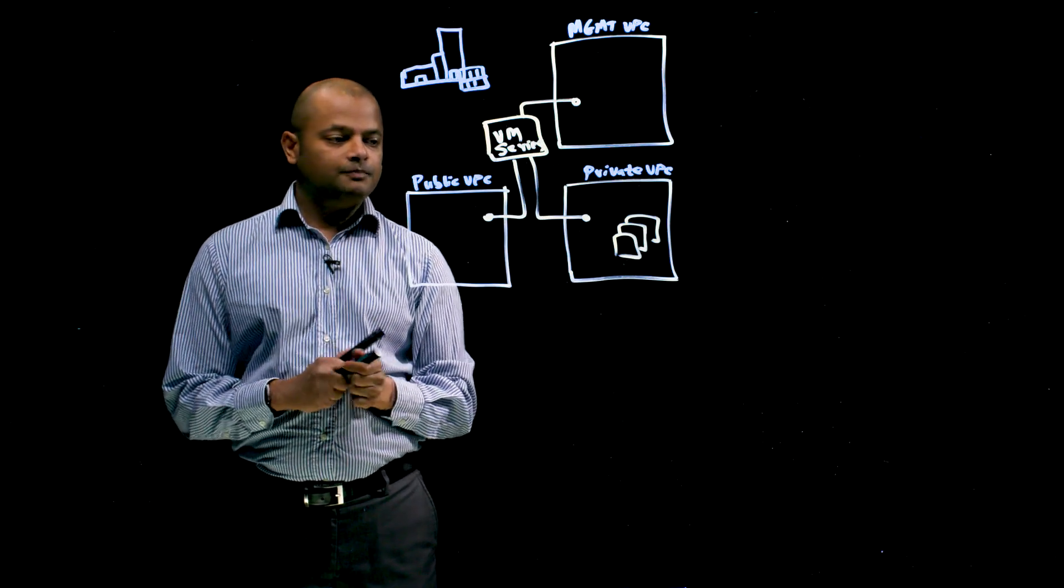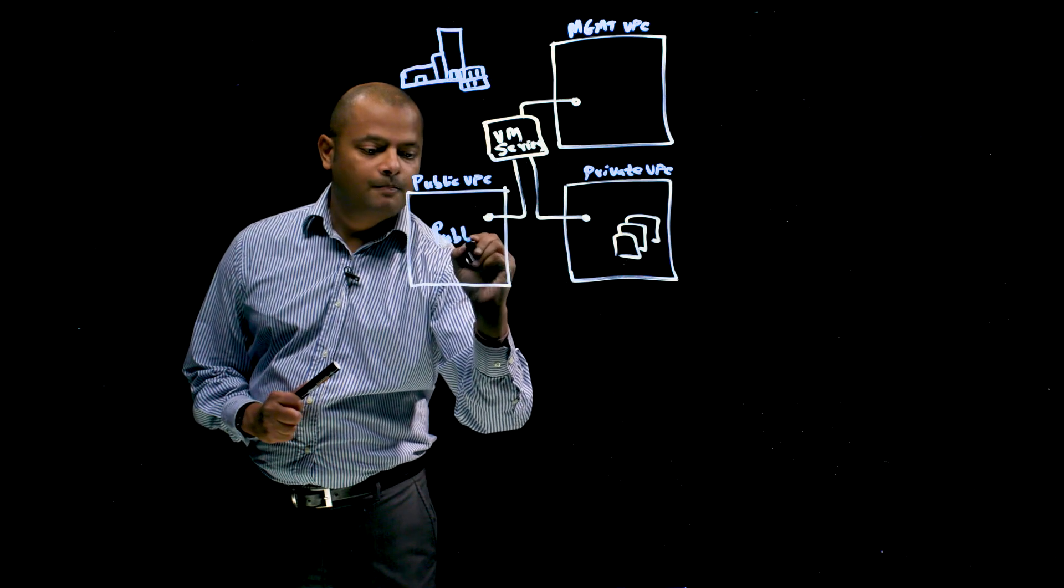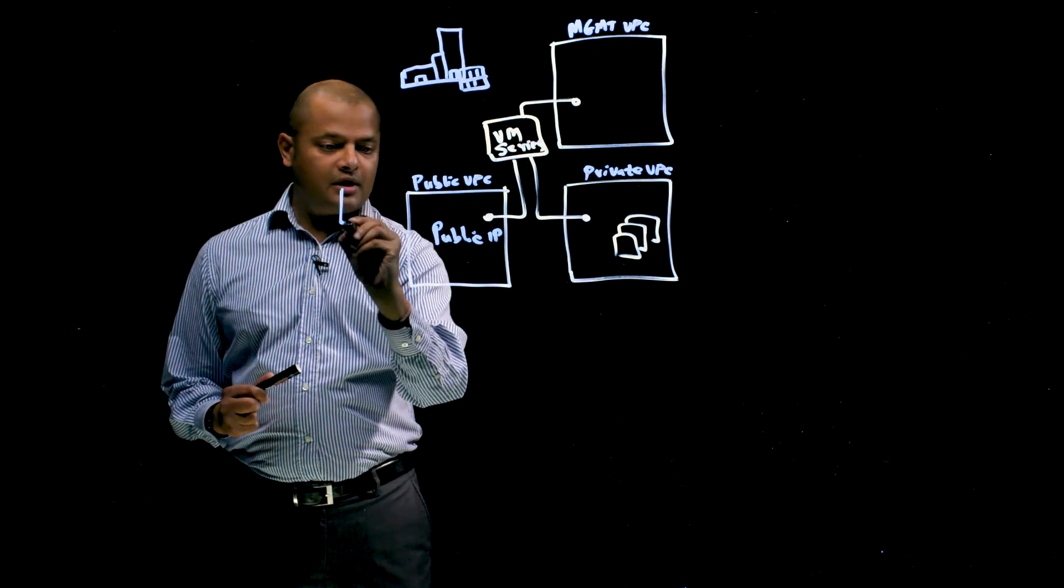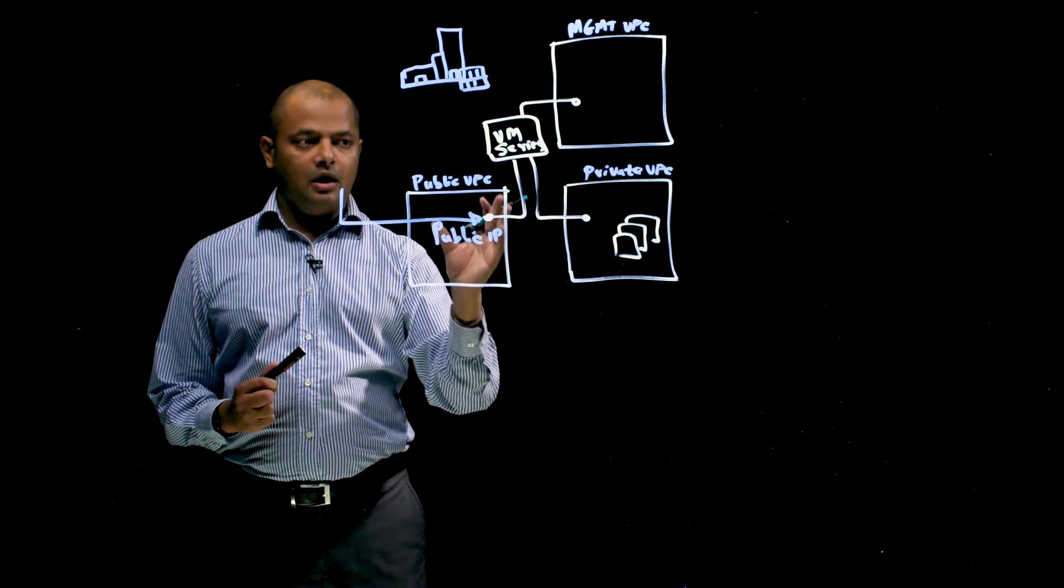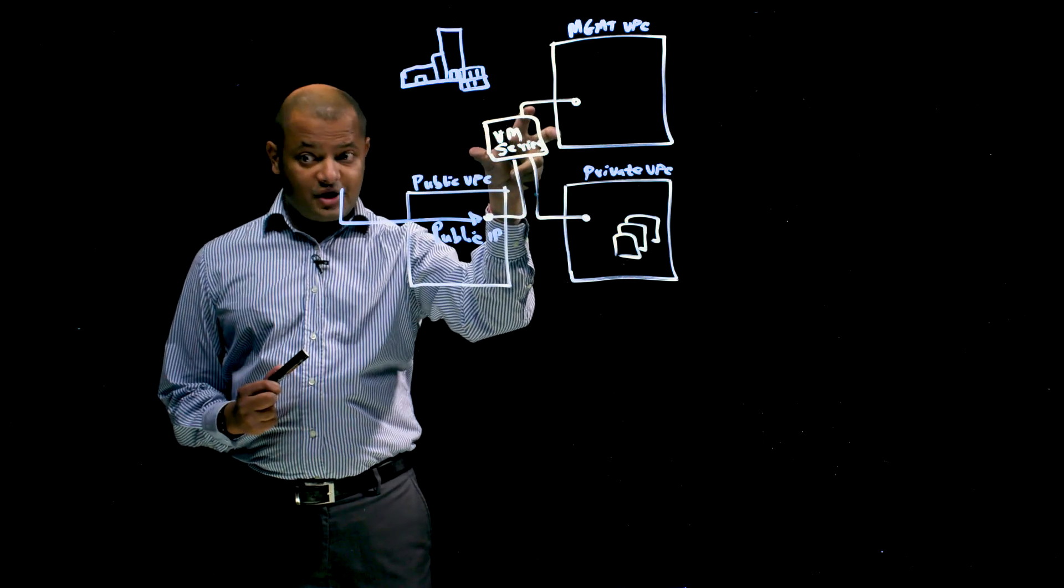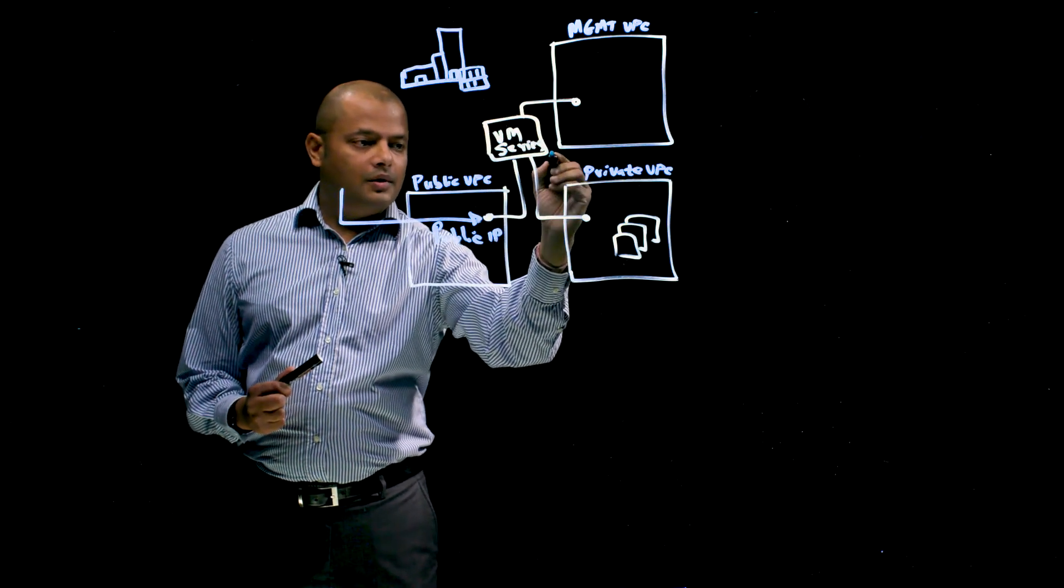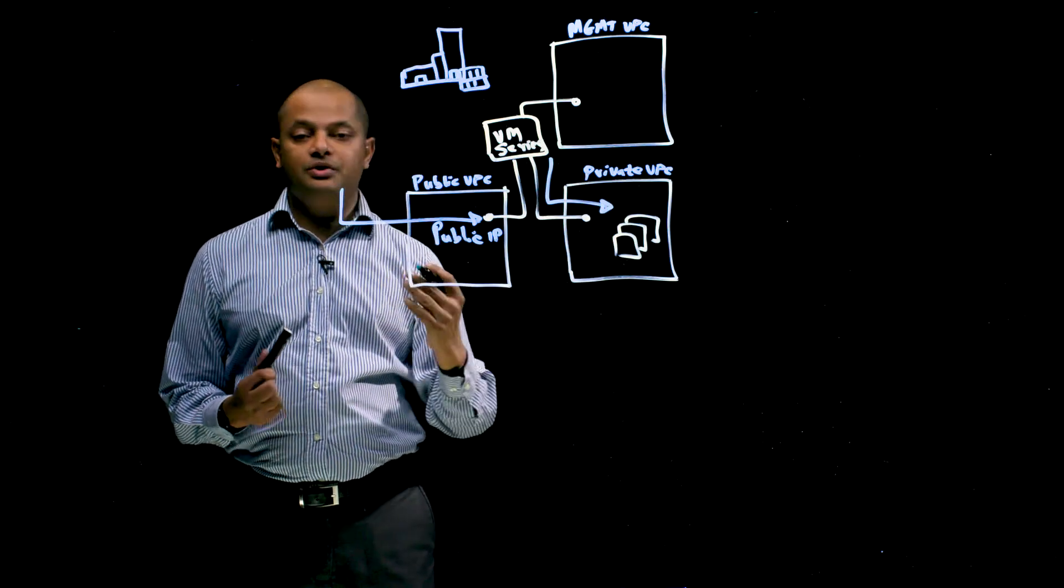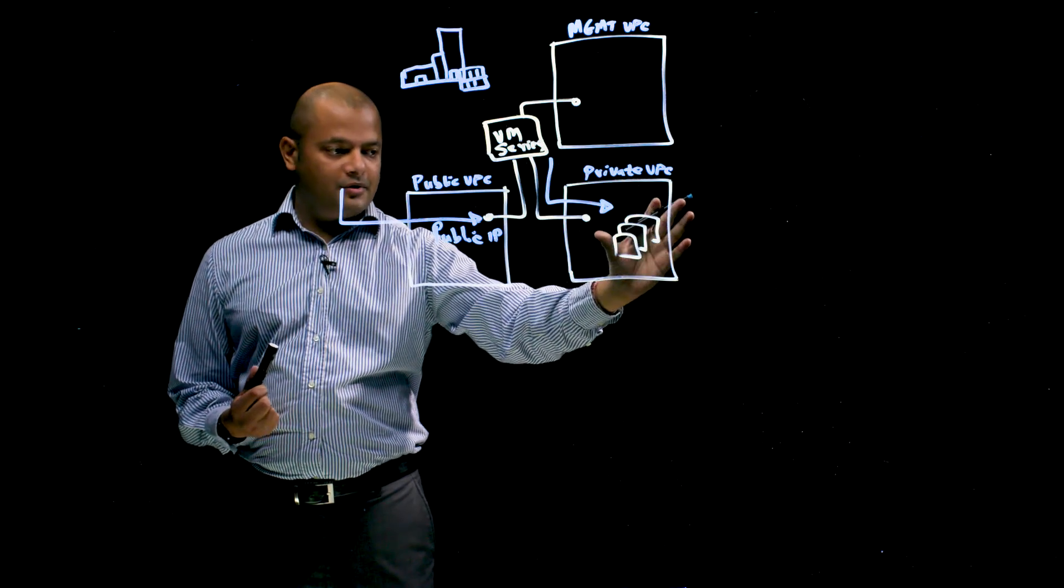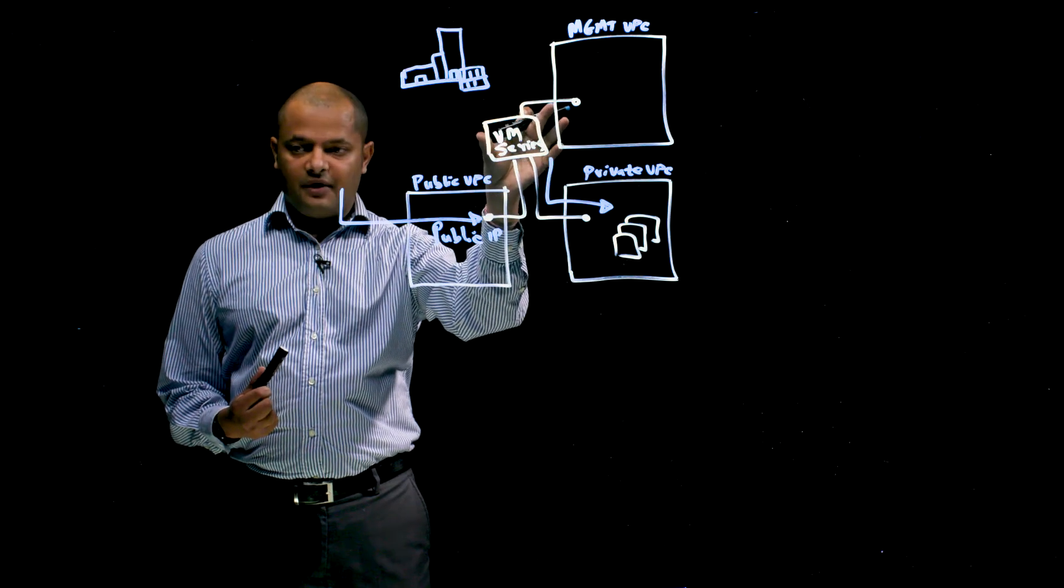And this is the deployment that you are wanting to expose out to the internet. What you would do is the firewall's interface on the public VPC, you can assign a public IP to this. And what that means is that when user traffic comes in, it's going to come into the public IP of your stack. It's going to come to the firewall. The firewall is going to inspect that traffic and apply security policies that you configured. And then the traffic is going to go in to your application stack based on your security policies.